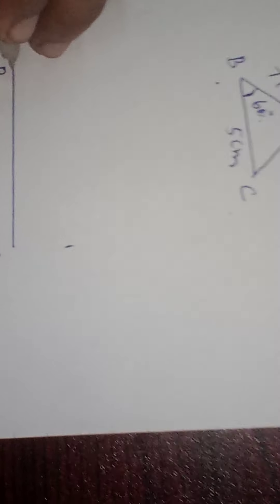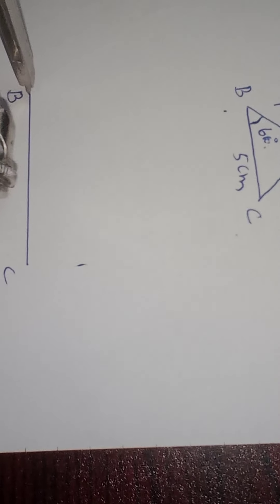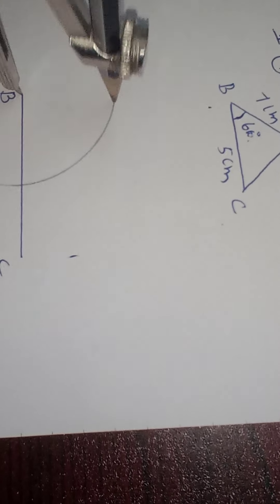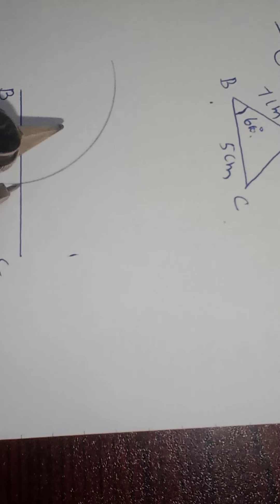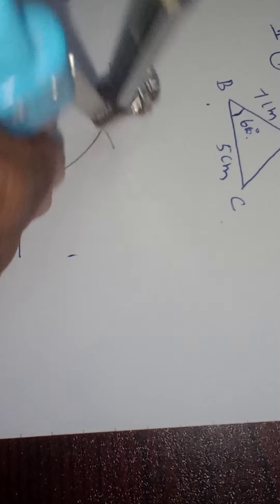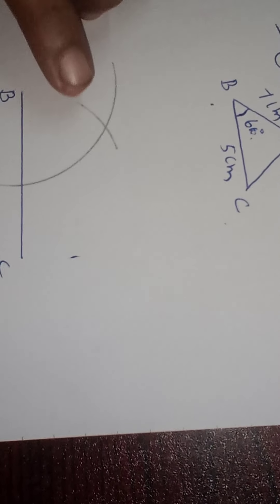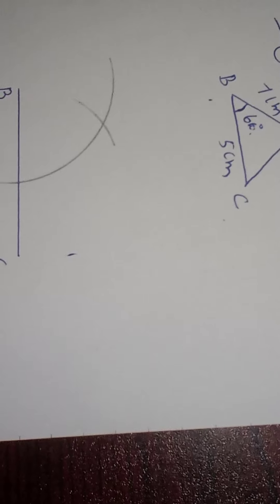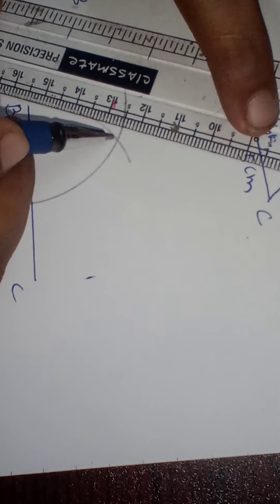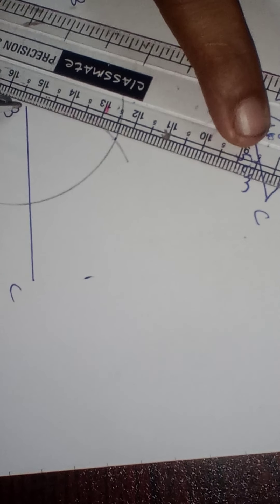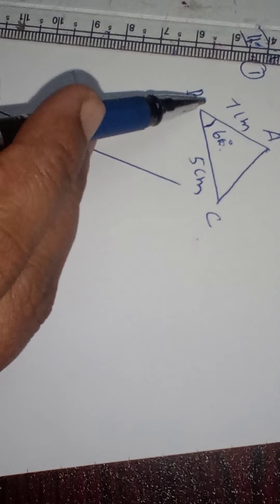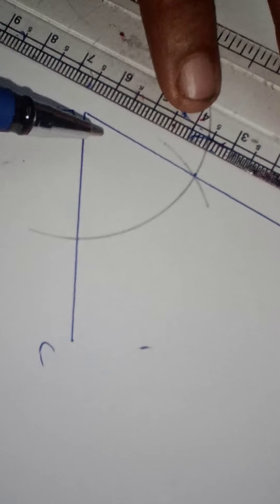Now, how will you draw 60 degrees? At vertex B, take any radius in your compass and draw an arc which will cut side BC at a point. From that point, draw one more arc with the same radius — you will get a point where the two arcs intersect. Join the vertex B to that intersection point. This gives the 60 degree direction. Now extend this line — we know AB equals 7 cm, so mark up to 7 cm to get point A.